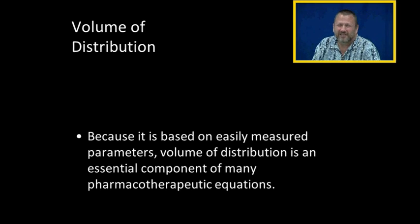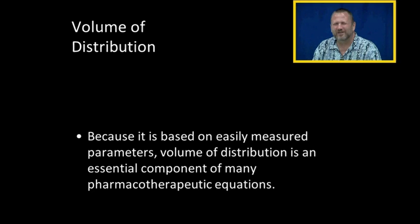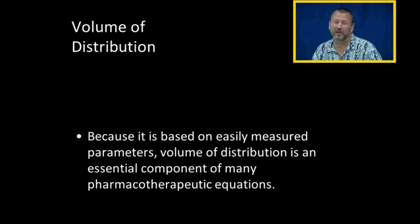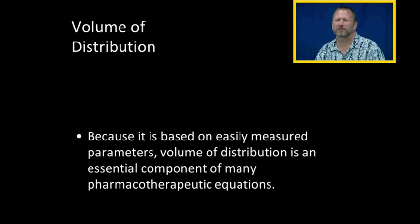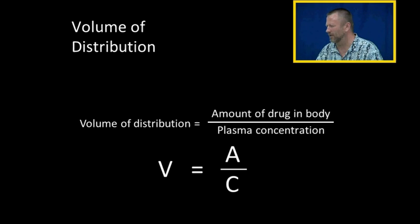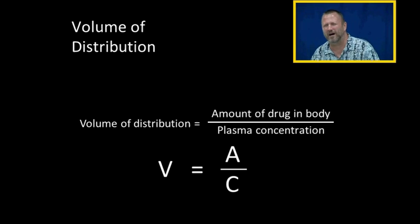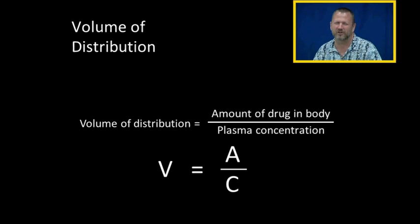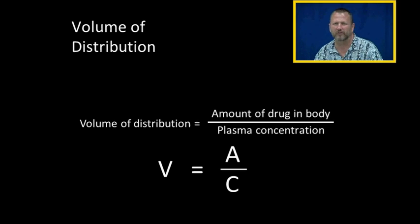Because it is based on easily measured parameters, volume of distribution is an essential component of many pharmacotherapeutic equations that those in the professional pharmacology field will need to understand. The volume of distribution equals the amount of drug in the body divided by the plasma concentration, abbreviated V equals A over C.